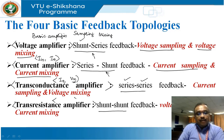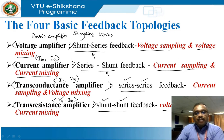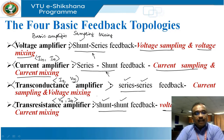In the trans-resistance amplifier, the gain is V0 by Iin. The output voltage is sampled in shunt, and the current is mixed at the input also in shunt. So both are shunt, giving the name shunt-shunt. This is how the four topologies get their names based on the basic amplifier type used.